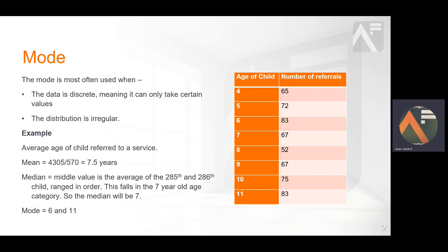The reason for this might be interesting to explore further. It could be biological, due to development stages; demographical, due to birth rates; or structural, due to the system or wider system. The key point is that the data has an irregular distribution, and so the mode tells us more than the mean or median for this example.